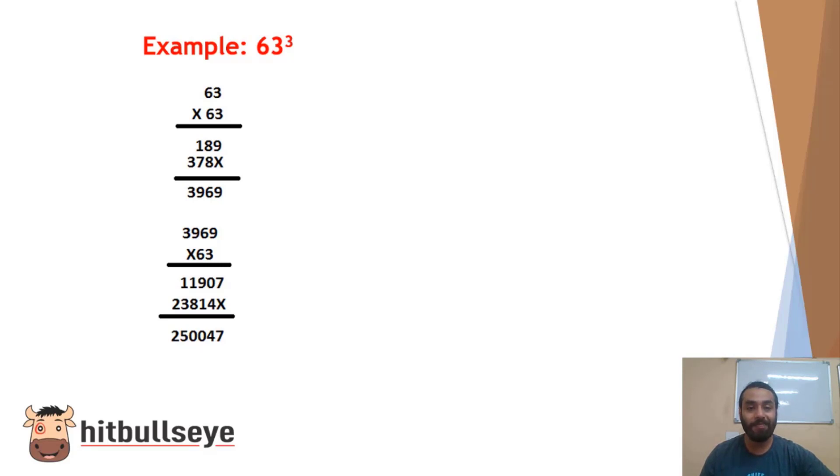Now we talk about the trick. So the trick for the numbers between 1 to 100: 63 cube we have. Now what do you have to do?